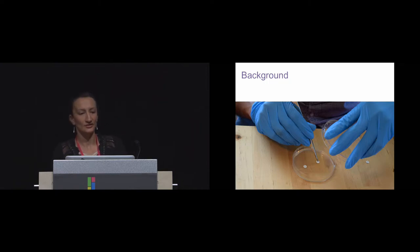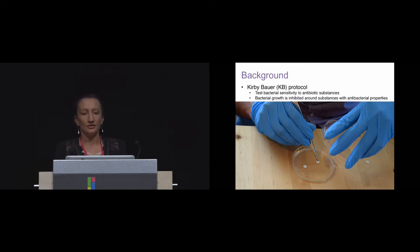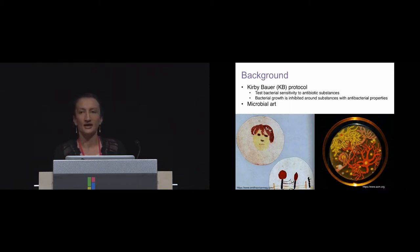There are three starting points for this project. The first is the Kirby Bauer protocol, which is a basic microbiology procedure for testing substances for antibiotic responsiveness. It is based on this principle that bacterial growth is inhibited around substances that have antibiotic properties. So this protocol consists of streaking a petri dish with bacteria, then placing antibiotics on top and observing an inhibition zone around the antibacterial substances. The second entry point was this practice of microbial art, which basically consists of streaking bacteria or fungi onto petri dishes to create different types of designs. And this is actually a very old practice. So Alexander Fleming, the scientist who discovered penicillin, is said to have been a microbial artist. The images on the left are attributed to him.